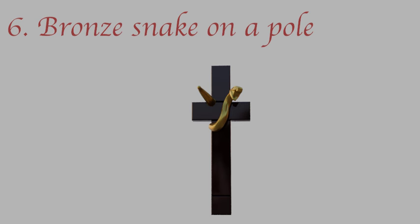The bronze snake foreshadows Jesus. The Israelites were being bitten by snakes due to their impatience, so Moses talked to God, and God told him to build a bronze snake on a pole — whoever sees it will not die but live. It's literally a foreshadow of Jesus: whoever sees the Son and follows him will not die.